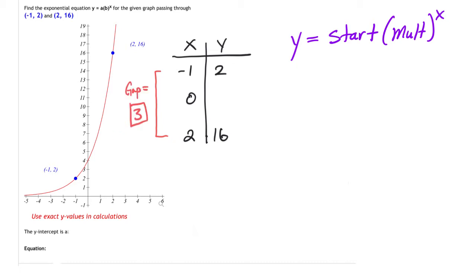Then I take that 3 and I'm going to be using that to help me find the multiplier. The multiplier formula is the gap root of next over previous. Now the next value is going to be found by doing the lower number on the table here. This is the next and this is the previous.